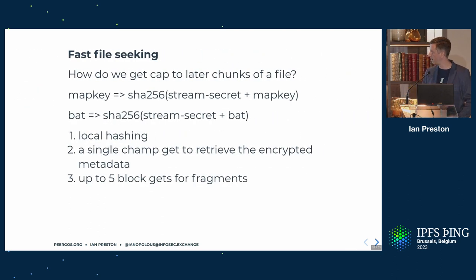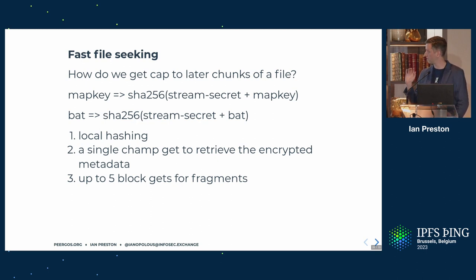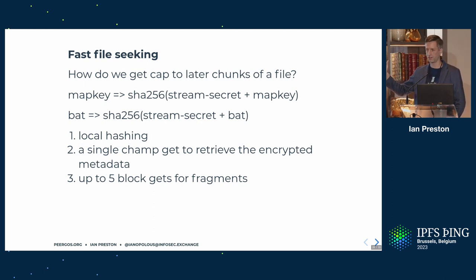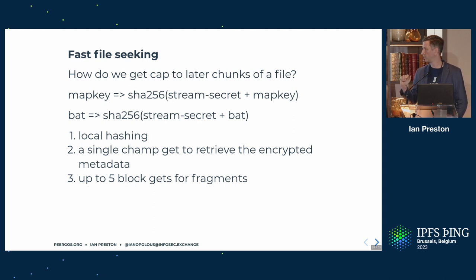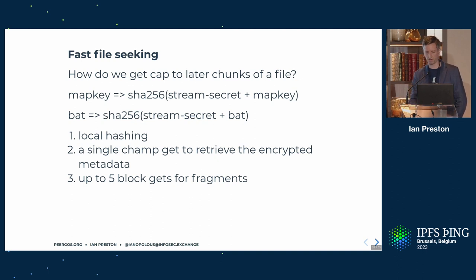The final cool optimization is fast file seeking. If you have a large file, once you've got the metadata of the first chunk, you can — just from hashing locally — generate a capability to a later section of the file. You know the total size from the first chunk's metadata. You do a bunch of local hashing and then a single CHAMP get — one round trip to retrieve the encrypted metadata, then up to five block gets for the fragments. This means you can jump forward very quickly, which is very useful for things like streaming a movie.